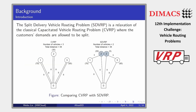The capacitated vehicle routing problem has been fully introduced in the topics over the past few days. The problem studied in this topic, SDVRP, is a relaxation of CVRP where each customer can be served by multiple vehicles. Dror and Trudeau first introduced this problem in 1990, and they demonstrated that demand splitting can improve both the routing cost and the number of vehicles.